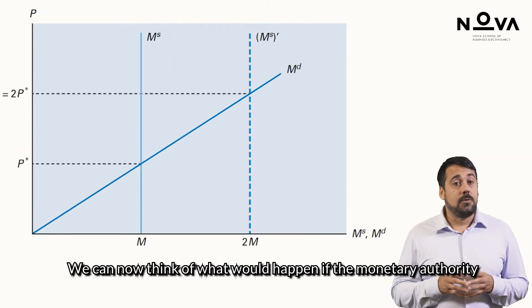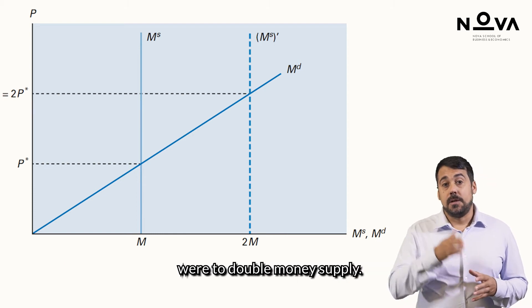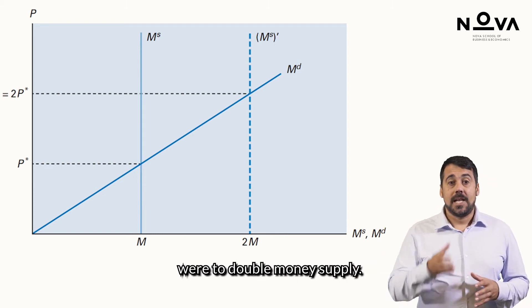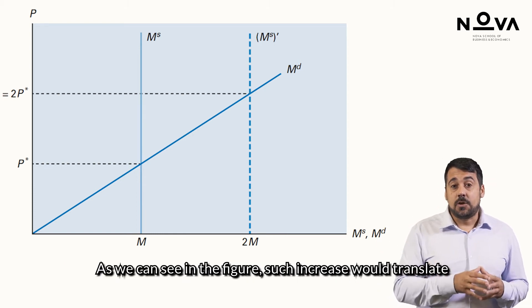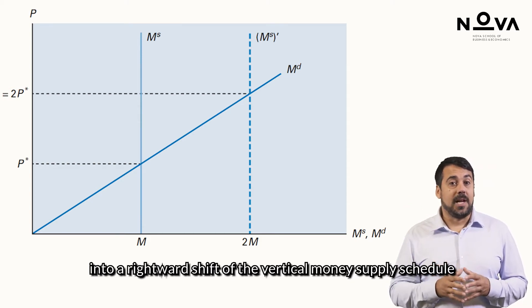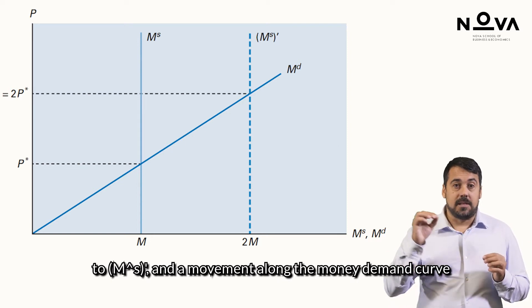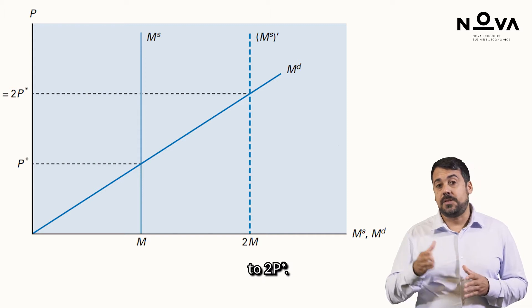We can now think of what would happen if the monetary authority were to double money supply. As we can see in the figure, such increase would translate into a rightward shift of the vertical money supply schedule to M superscript S prime, and a movement along the money demand curve to 2 times P star.